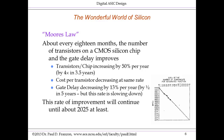If automobiles were on an exponential growth curve comparable to computer chips, we'd be able to drive at tens of thousands of miles an hour, consume a million miles per gallon, and crash and burn every day while debugging the car. So this has been a unique achievement to have this exponential growth law.